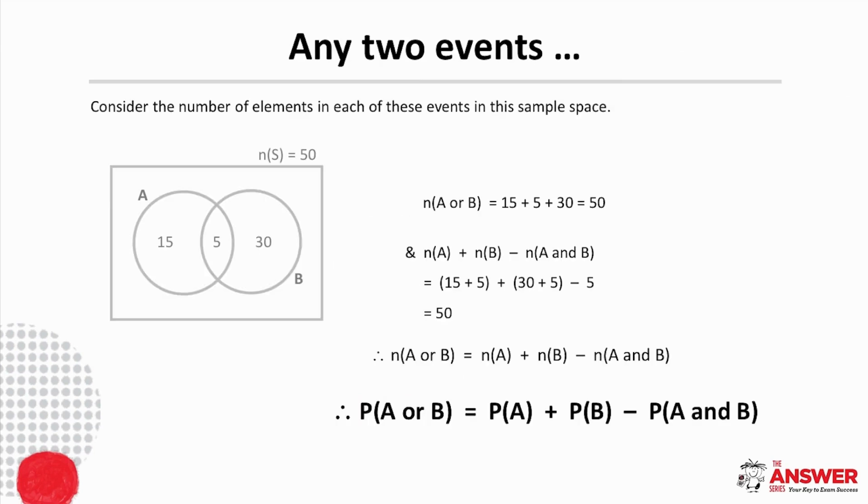Now let's consider what is true for any two events by looking at the following example. Here the number of elements in A or B is 15 plus 5 plus 30 which equals 50. Then if we look at the number of elements in A and the number of elements in B separately we would need to count the 5 twice.